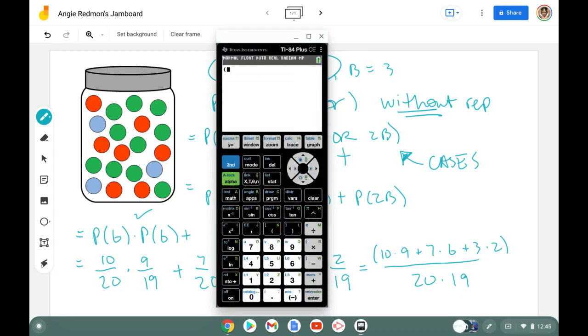Let me move this over here so that we can see and I'm going to go ahead and put it in just like we see there. So 10 times nine, that was the first case plus seven times six. That was the second case plus three times two divided by 20. Oh, I need a parenthesis there.